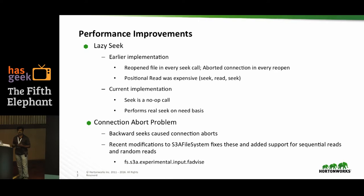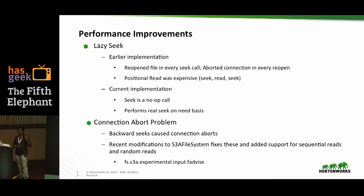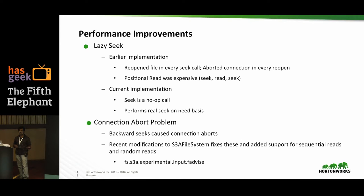A second problem was backward seeks. File formats like ORC and Parquet first read footer information at the end of the file and then go back to the beginning to read block details. This was expensive because a backward seek terminated the connection. In recent versions, a new fadvise variable was introduced that can be set to random mode or sequential mode. In random mode, S3A requests exactly the bytes needed, reducing the number of connection aborts.